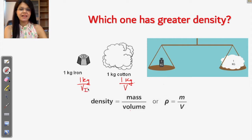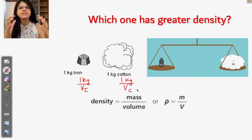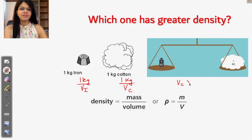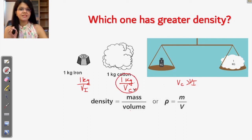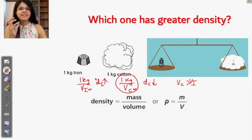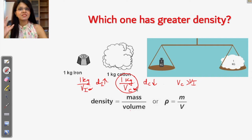Let VI be the volume of iron and VC be the volume of cotton. Cotton is fluffy, so it has more volume — the volume of cotton is greater than the volume of iron. When the denominator is larger, the density is smaller, so the density of cotton is less than the density of iron. Iron has a smaller volume, meaning a smaller denominator, so dividing by it gives a larger density value.